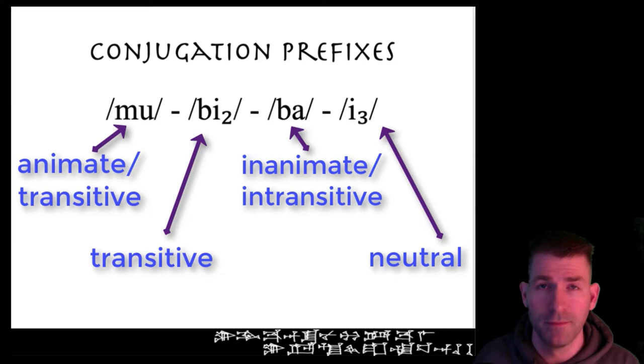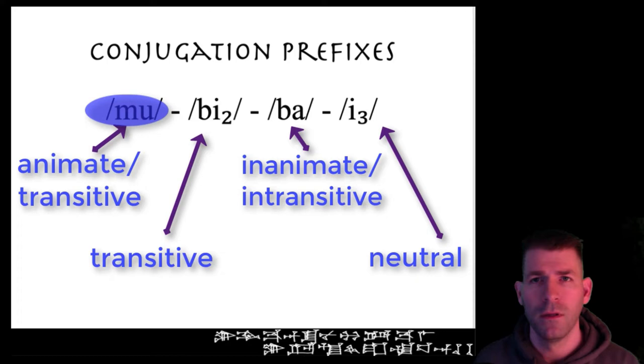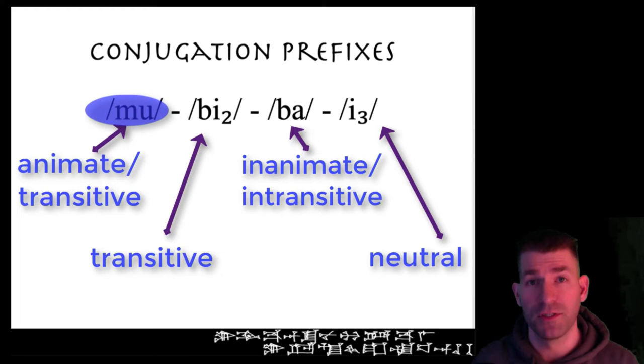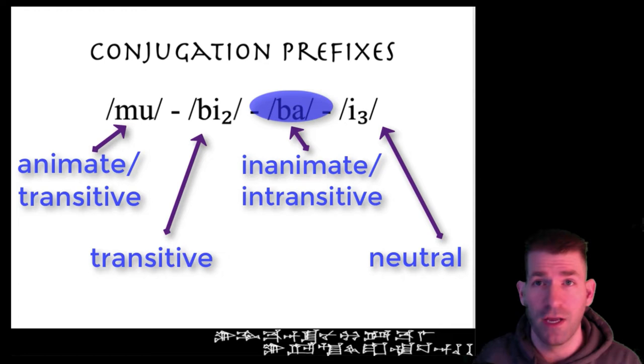Additionally, animate subjects or agents generally appear with certain prefixes, while inanimate subjects usually occur with others. If we see the form mu-n-verb, without knowing anything else about the sentence, we would think that the subject agent of the verb is animate—a person or deity—and that the verb is likely transitive.